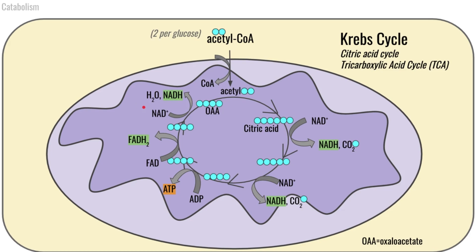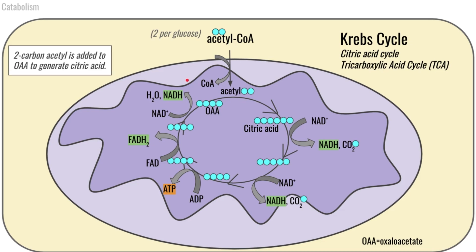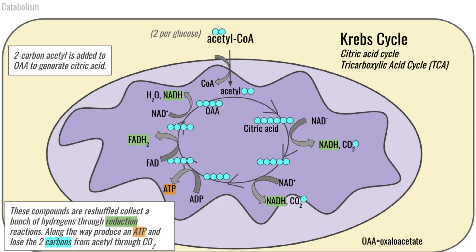So that overall is the Krebs cycle. Think of it as: we are adding two carbons from our acetyl-CoA to OAA, and from there, this six-carbon molecule gets reshuffled repeatedly. Over that process, we are reducing a whole bunch of NAD to NADH, generating a little bit of ATP by adding a phosphate group to ADP, reducing FAD to FADH2, and reducing more NAD to NADH. The whole goal is to generate a whole bunch of reduced compounds — those hydrogens — because we're going to use them in the next step to actually synthesize ATP.